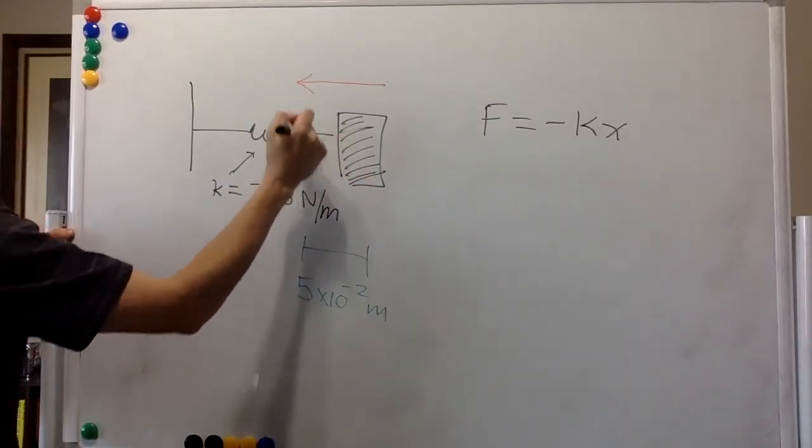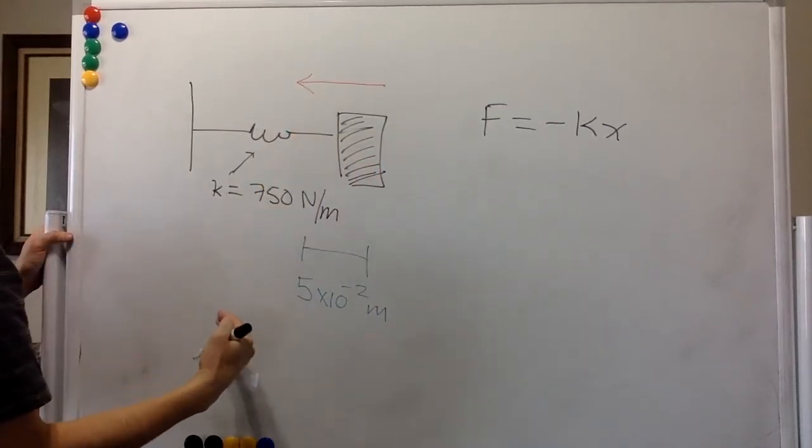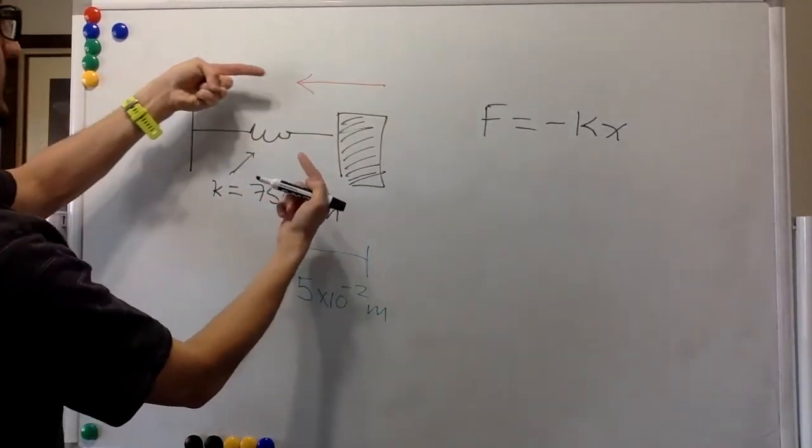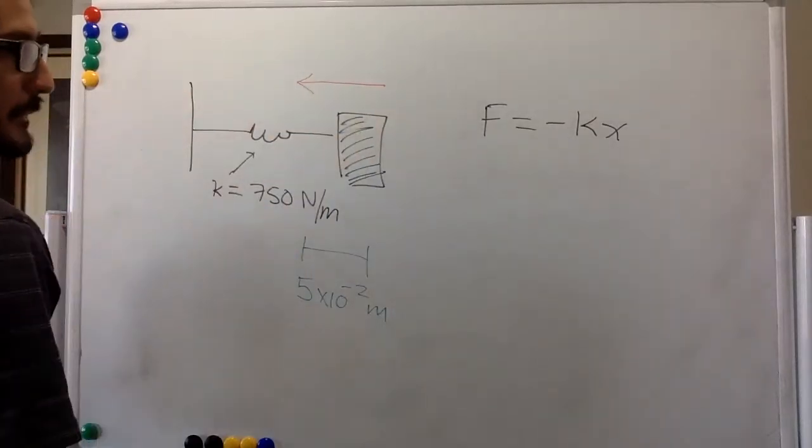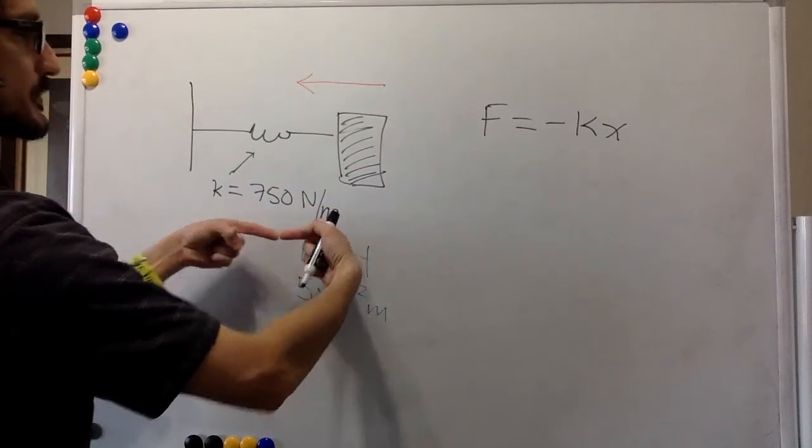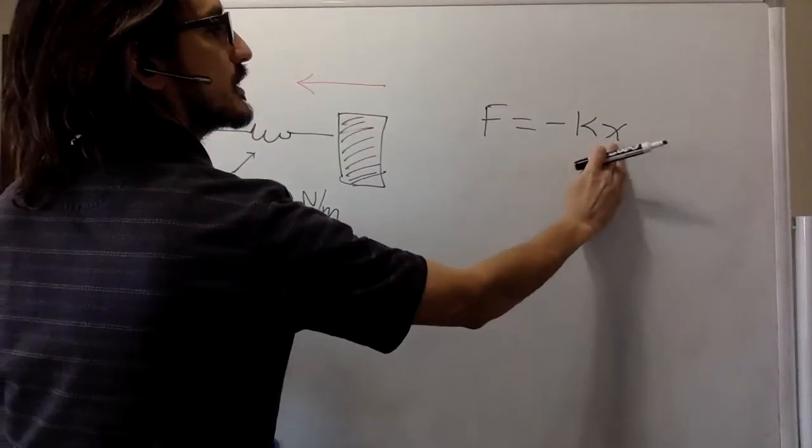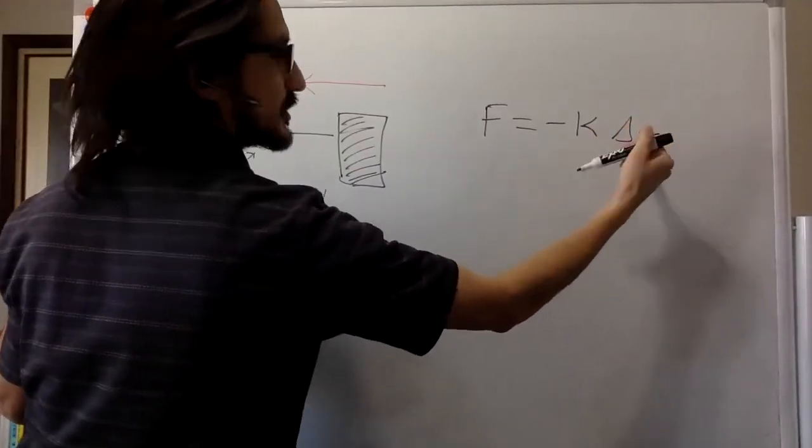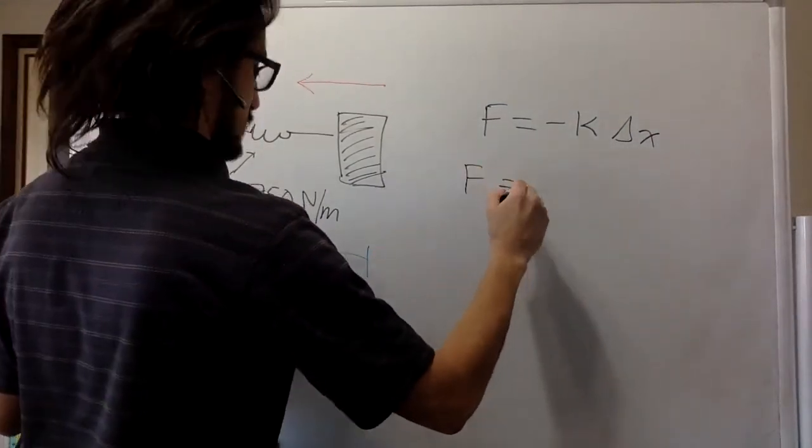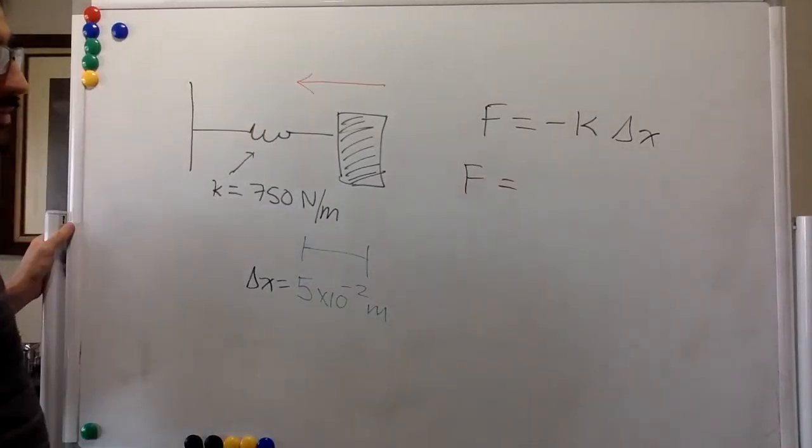So in order to remain in this position, removed from the position of equilibrium, then the spring has to produce a force that is exactly equal to the force that is being exerted on the spring, right, in order to remain over here. So the spring constant is given. The displacement, I should write this one as displacement. The displacement is given. And so the force is just, and we don't care about the direction.